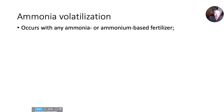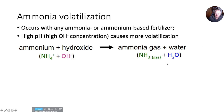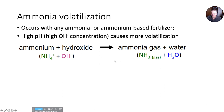Ammonia volatilization occurs with any ammonia or ammonium-based fertilizer. High pH or high hydroxyl concentration increases volatilization. Most of our soils are alkaline — pH above seven — so that's going to drive more volatilization from Wyoming soils right there. It happens when ammonium plus hydroxyl ions, which occur at pH above seven, combine to create ammonia gas and water. That ammonia gas is lost to the atmosphere — that's ammonia volatilization.